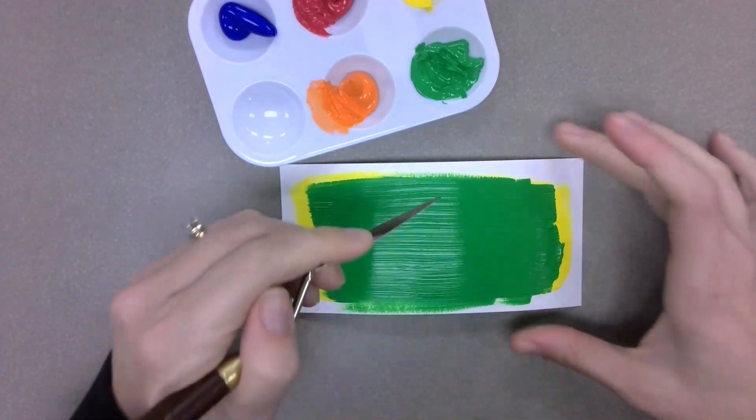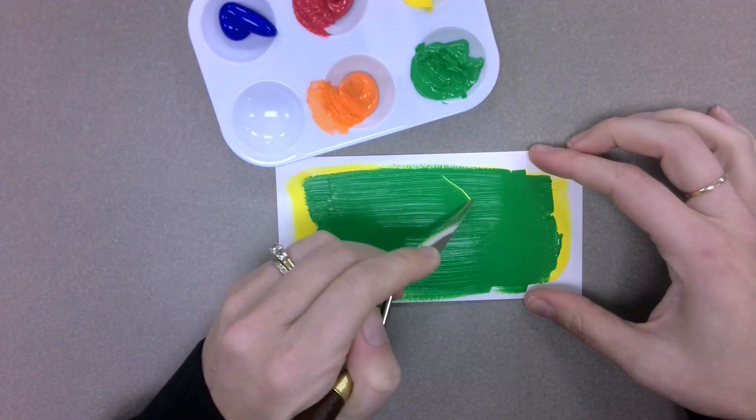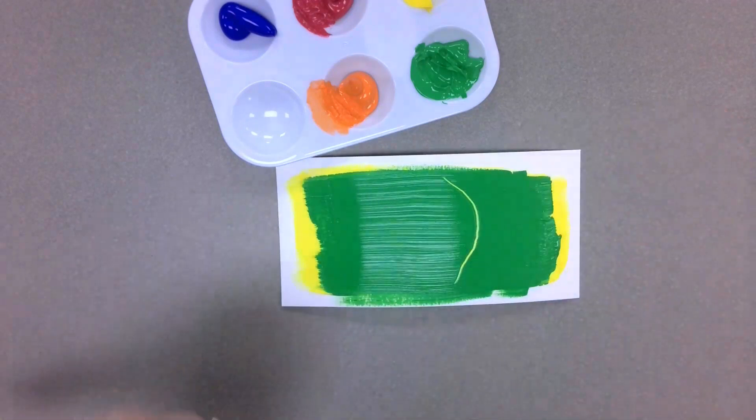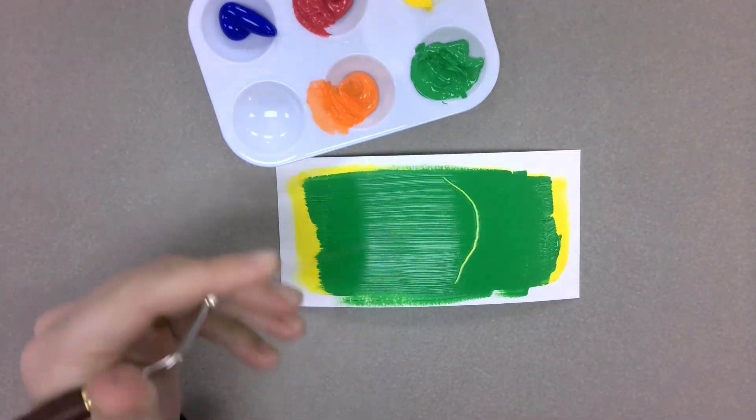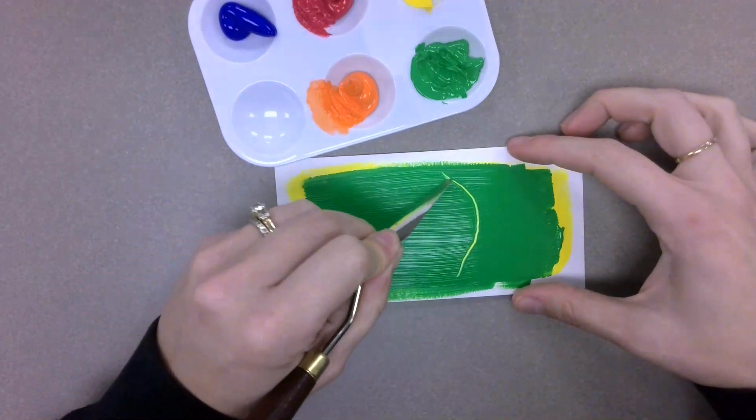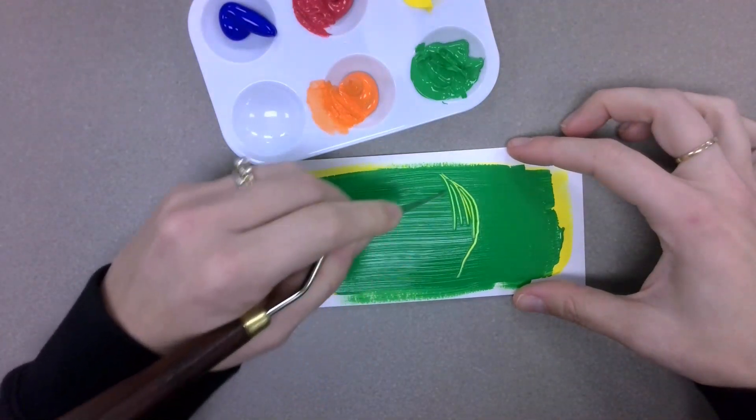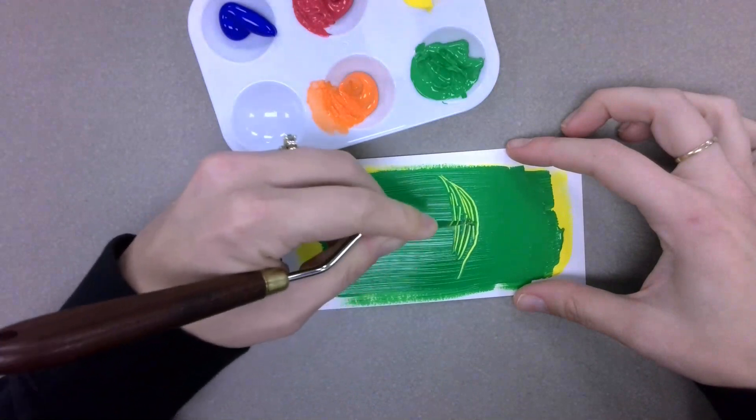So I'm going to start by just scraping away some of the green on top. And you can start doing this in a hatching or cross hatching motion.